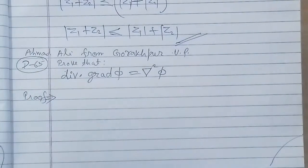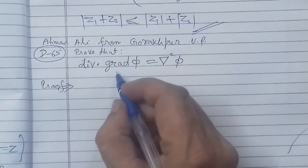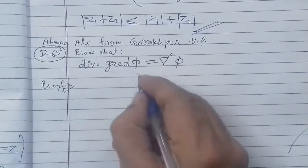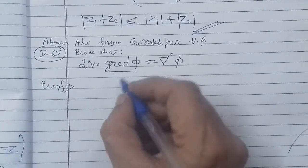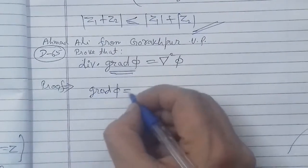Here phi is any scalar function. First of all, to go from left to right, if we have to prove, then whatever comes on the left hand side, we will calculate those. So here we need to find gradient of any function phi. Phi is a scalar function, so the value of gradient phi will be...